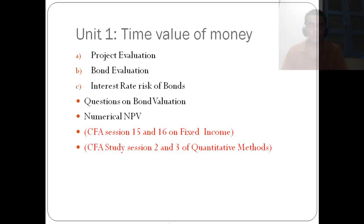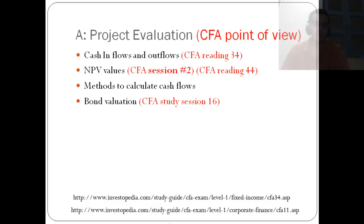Now as I have told you, it is about four units. The first unit is time value of money. It has got three types of numericals which we see in this certification program. The first is project evaluation, then the bond evaluation, the interest rate risk, and the questions on bond evaluation and numericals on net present value. The content of this certificate can be linked down to study sessions 2 and 3, the quantitative methods of the CFA, and the 15 and 16 on the fixed income.